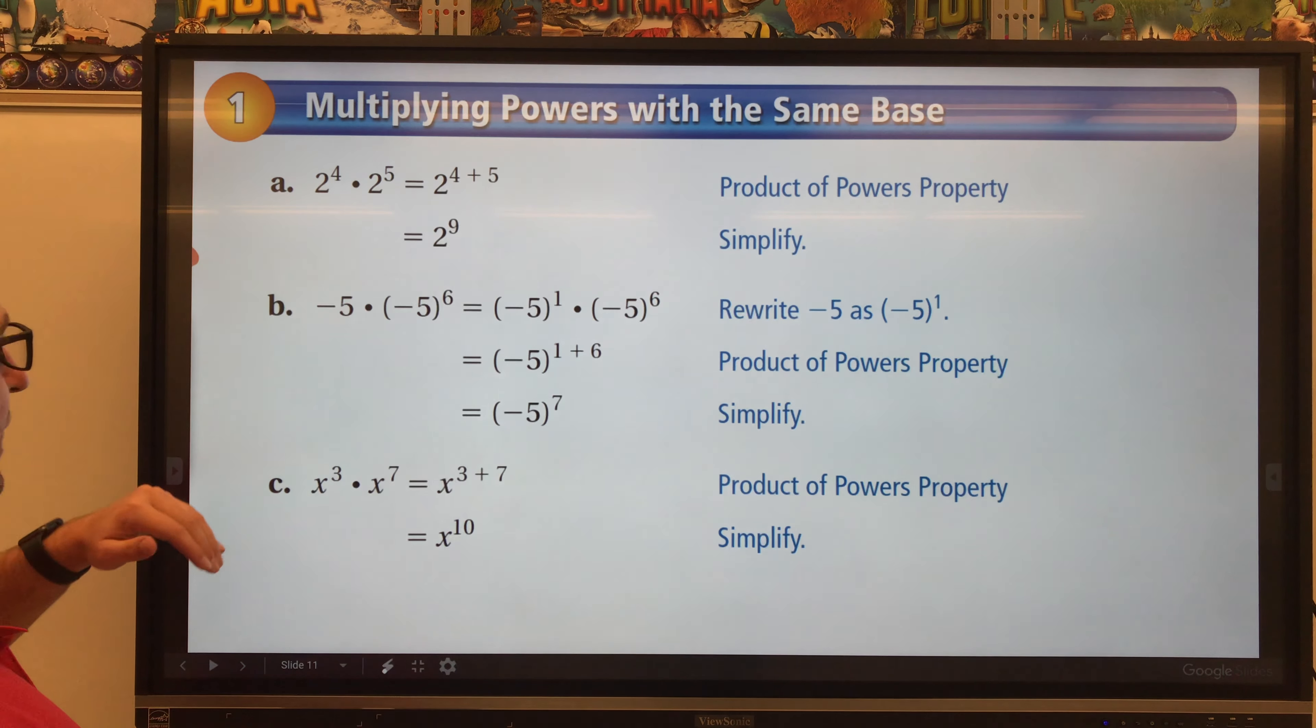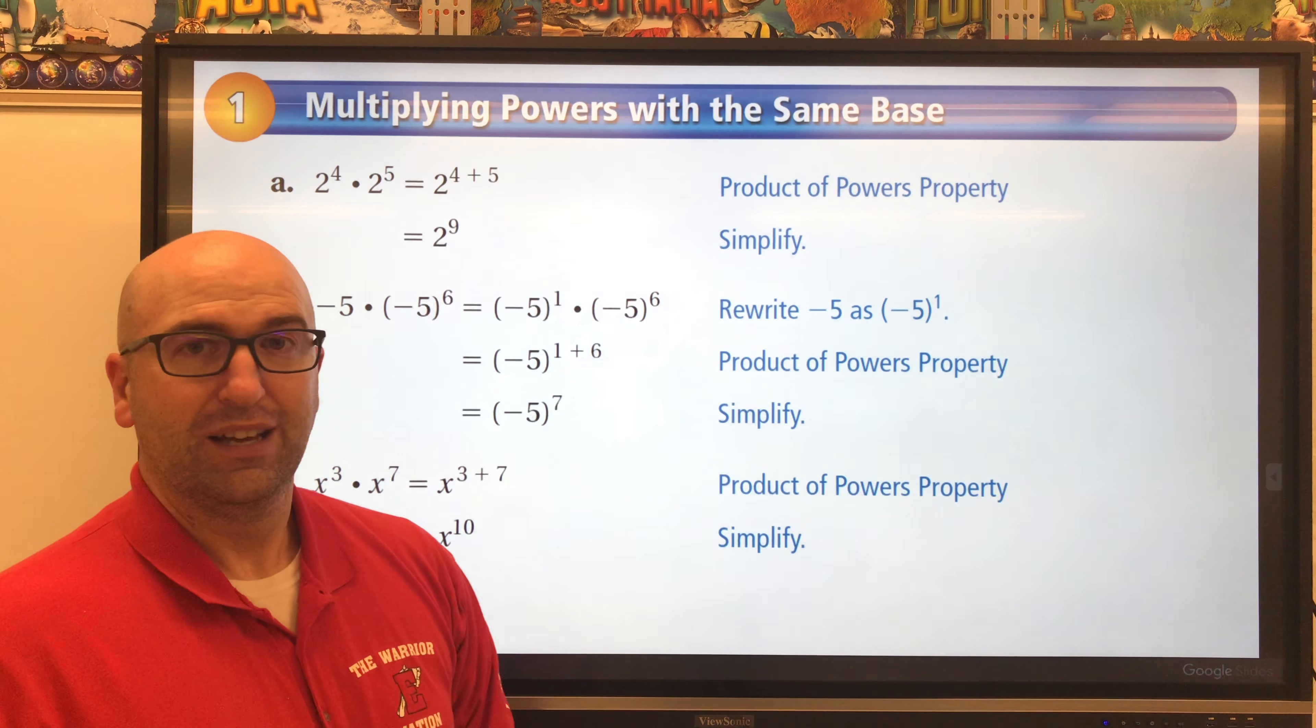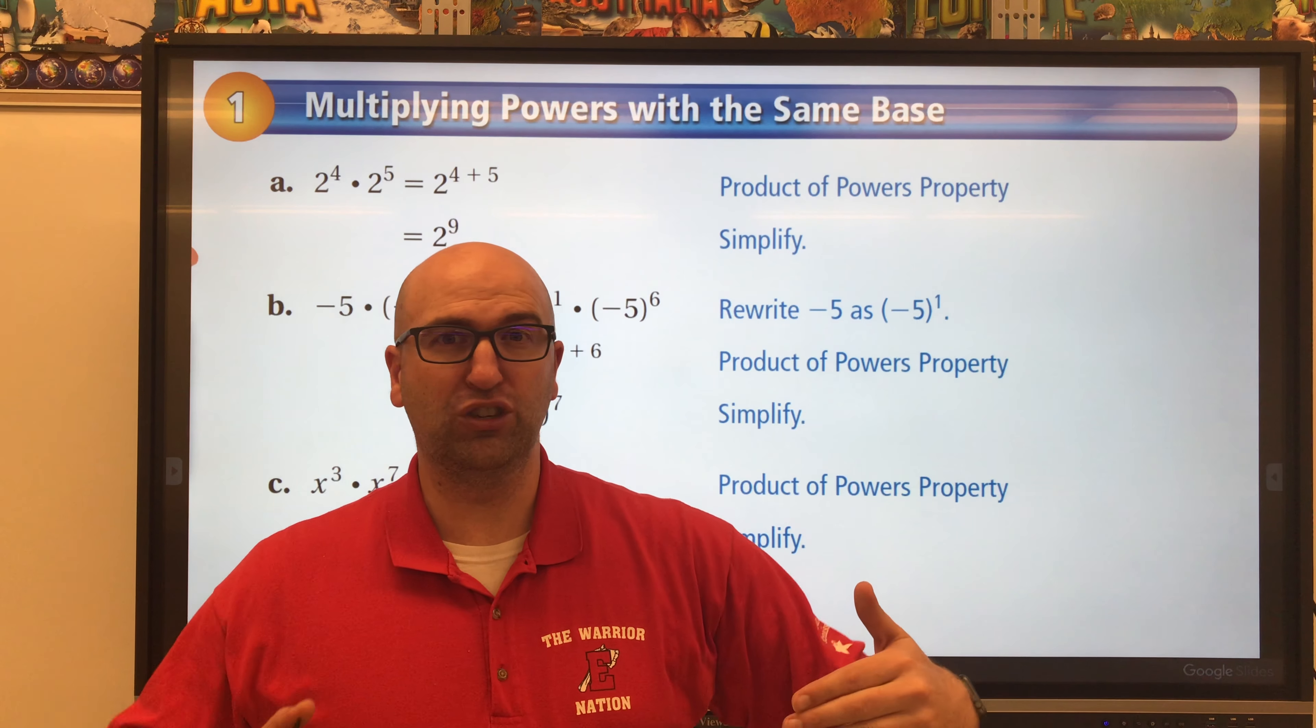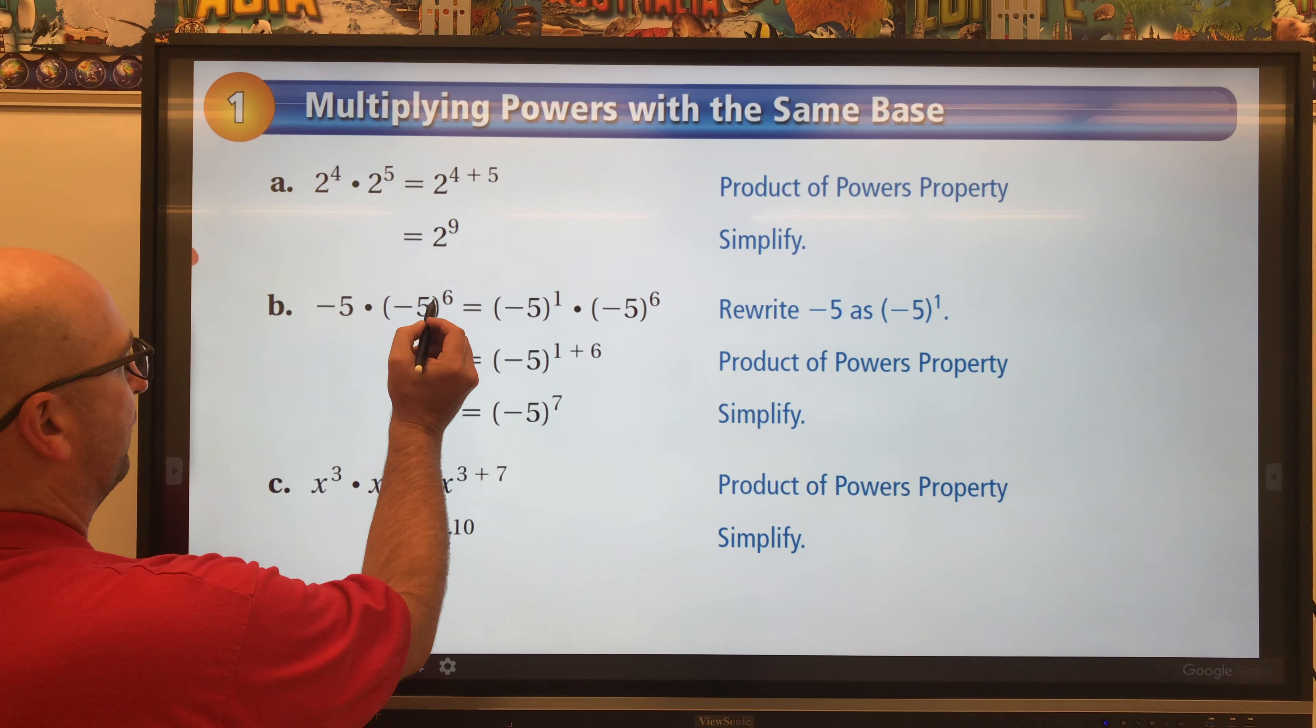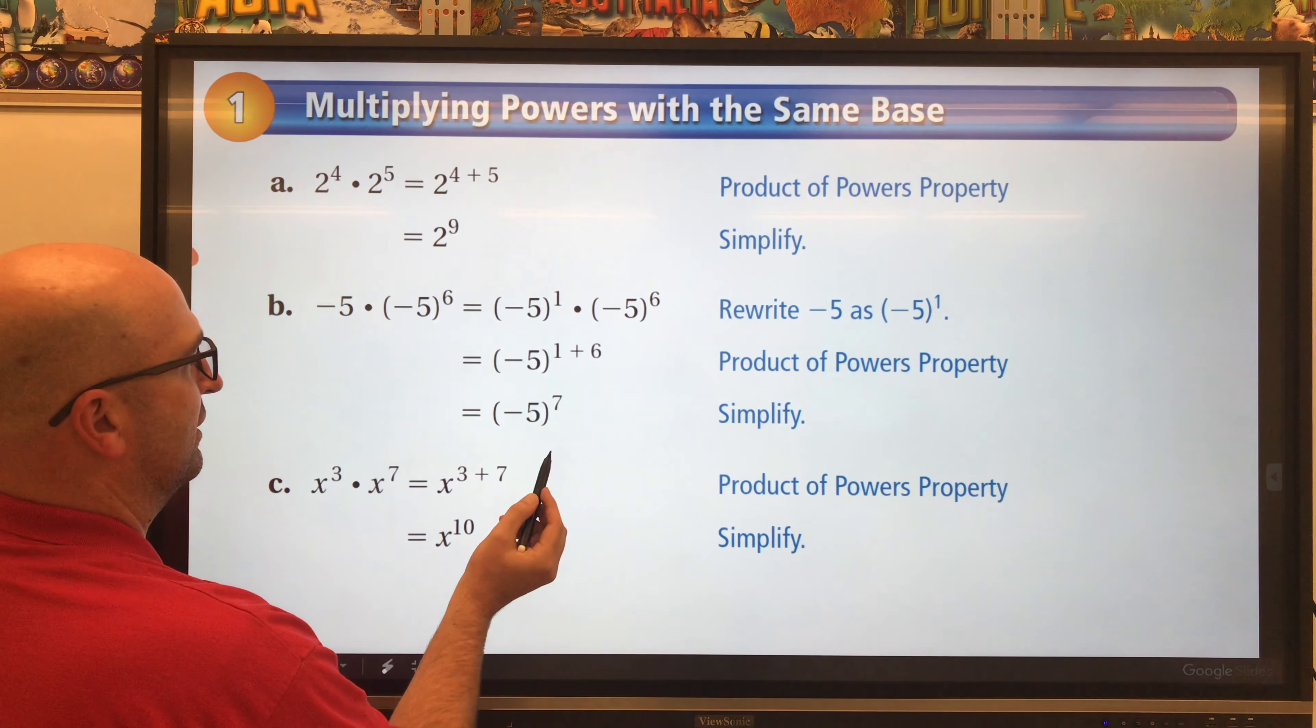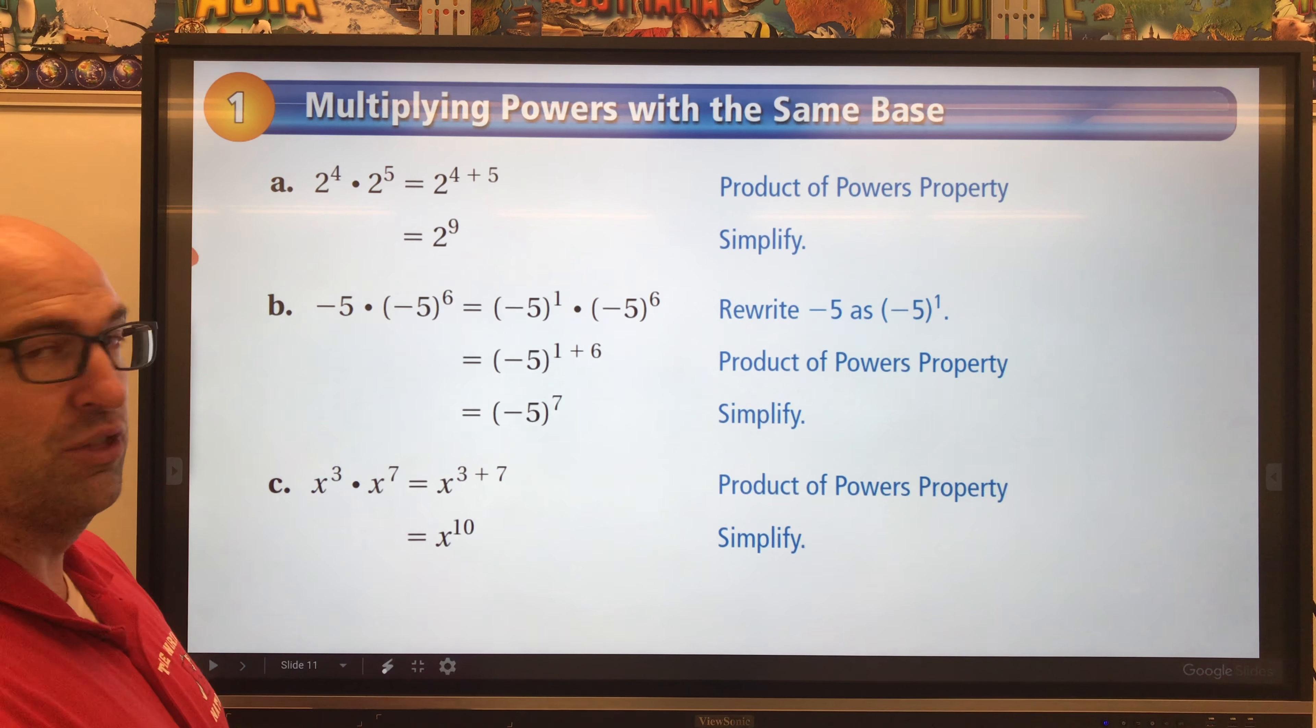Next example I have negative five times negative five to the sixth. Now negative five doesn't have an exponent with it, but we can add one. That means the same as negative five to the first power. So negative five to the first times negative five to the sixth. My exponents one and six, I add them together. That gives me negative five to the seventh power.